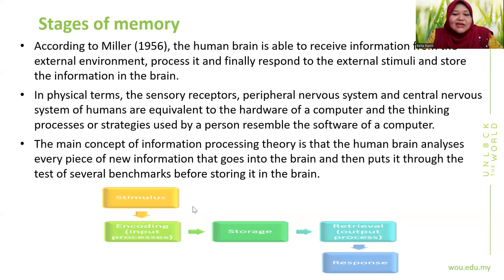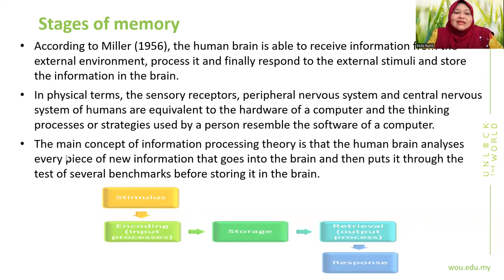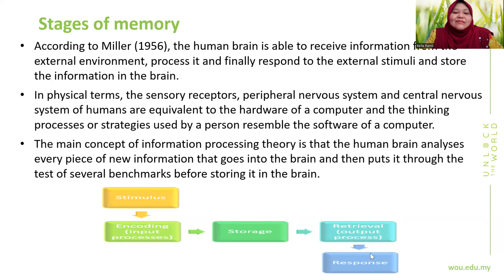When you encode, you change information from the environment into a form that your brain can store. It's hard to remember things you do not understand; to aid encoding, you need to relate or make sense of the information. The system must be able to process it, and encoding depends on your existing schema — how structured and extensive it is — which differs from one individual to another. There are three main ways information can be encoded: visual (through the eyes), acoustic (through the ears), and semantic (giving meaning to information, usually involving language).